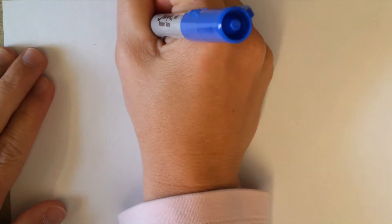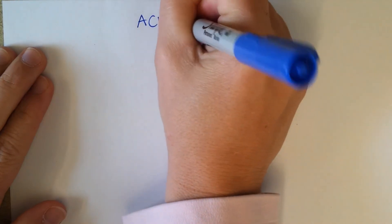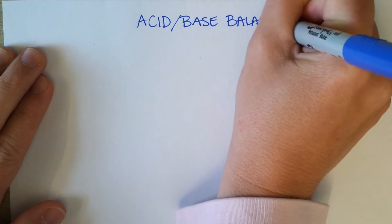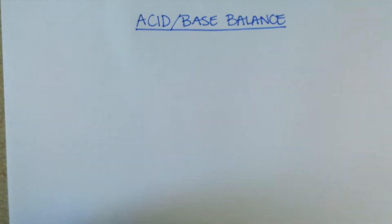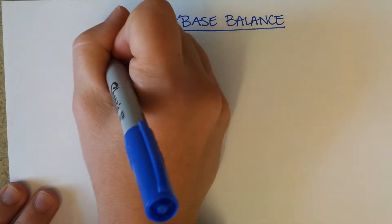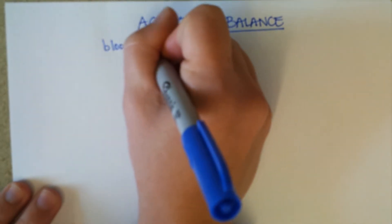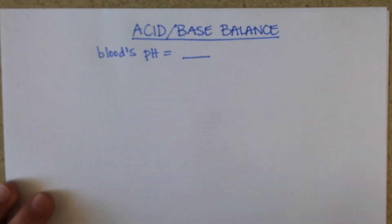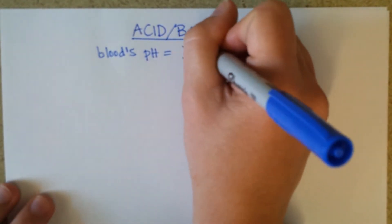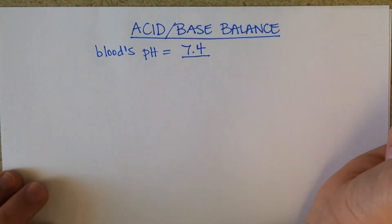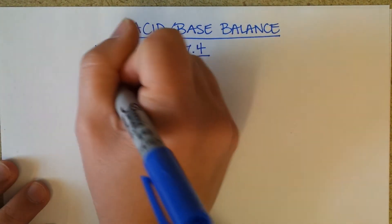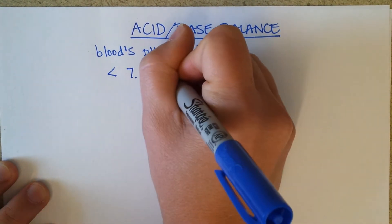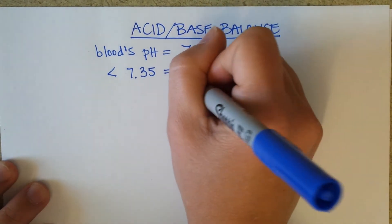Acid-base balance. The blood's pH is normally 7.4 — that's its regular pH, and it is very tightly controlled. If it is less than 7.35, then the patient has a condition known as acidosis.